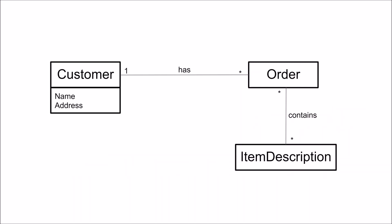To visualize a domain model we use the simplest form of UML notation: the class diagram. This is basically the notation you need to use for a domain model. We have classes — customer, order, and item description.